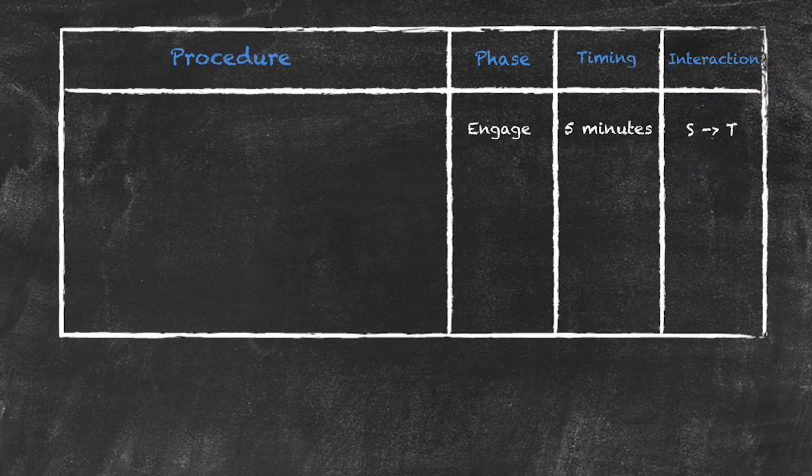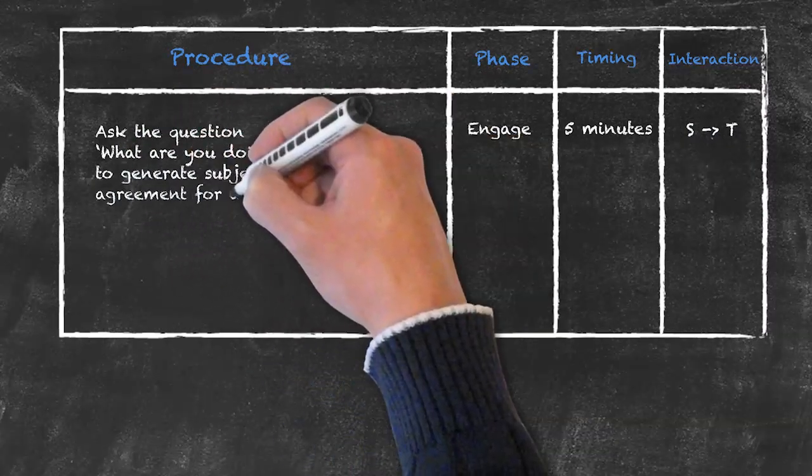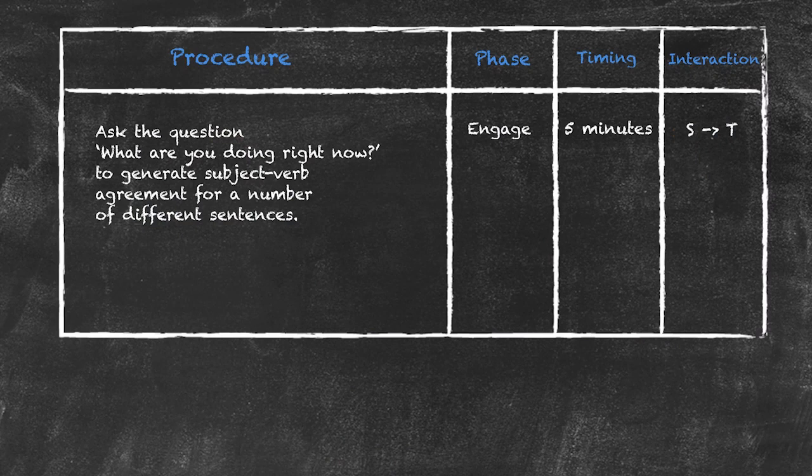So, what am I going to do in my engage phase? I'm going to ask the question, What are you doing right now? to generate the subject-verb agreements between a number of different subjects and their verbs.